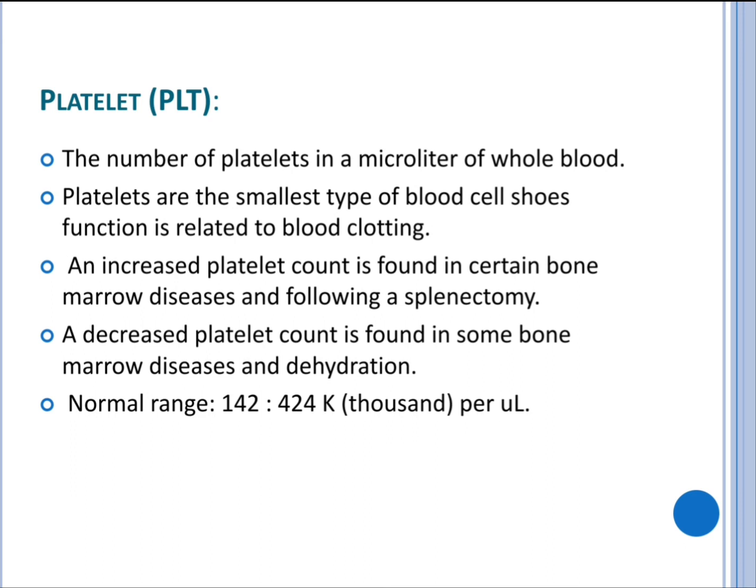Platelets are the number of platelets in a microliter of whole blood and are the smallest type of blood cells. Their function is related to blood clotting. An increased platelet count is found in certain bone marrow diseases and following a splenectomy, while a decreased platelet count is found in some bone marrow diseases and dehydration. The normal range is 142 to 424 thousand per microliter.